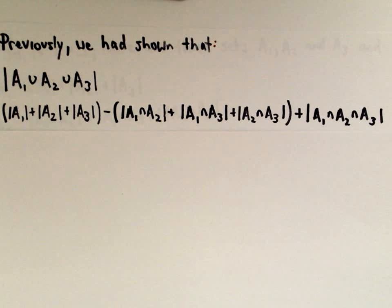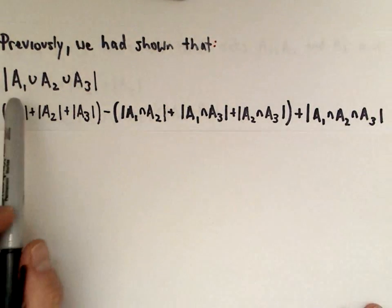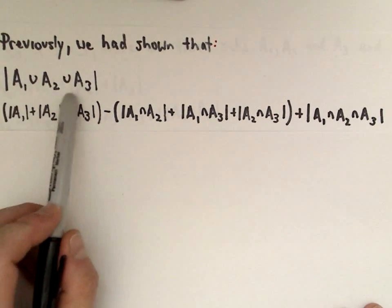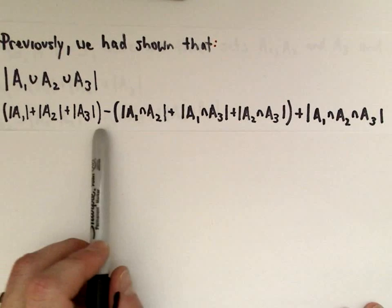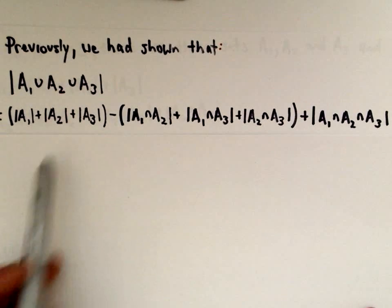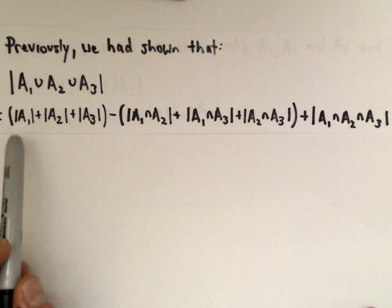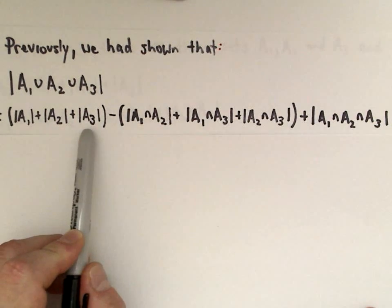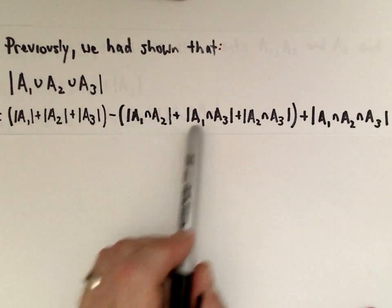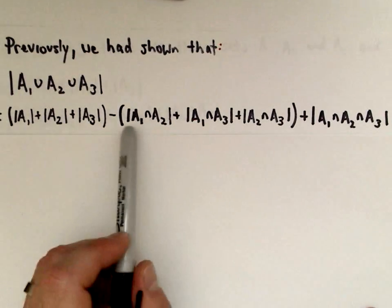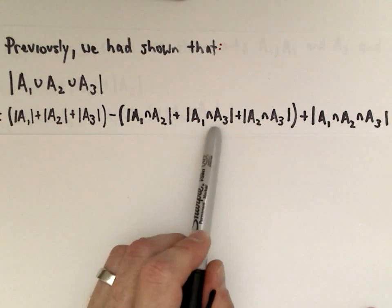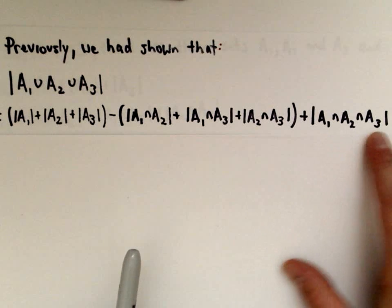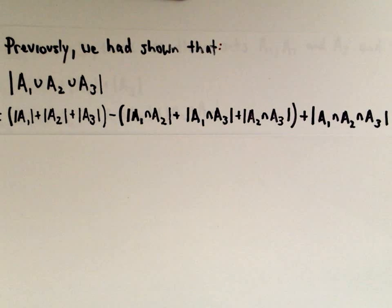To rehash, in the last video we did an example and showed that the number of elements in A1 union A2 union A3 follows this formula: we take the number of elements in A1 plus A2 plus A3, then subtract the pairwise intersections — A1 and A2, plus A1 and A3, plus A2 and A3 — and then add back the intersection of all three sets.